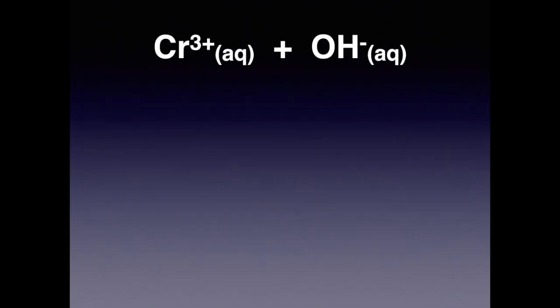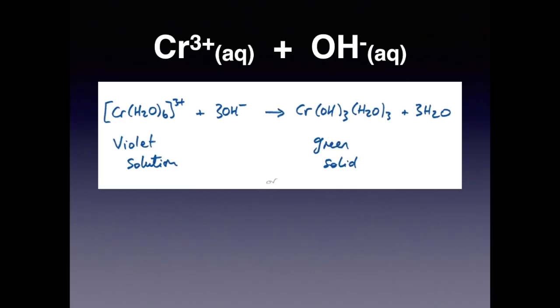The final transition metal we'll look at is chromium 3 plus aqueous. With the hydroxide ions, we're going to get this reaction here. We've got a violet solution going to a green solid precipitate, and of course you can simplify it to that equation there.